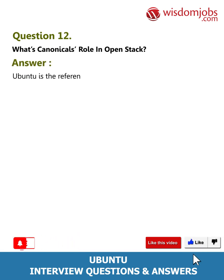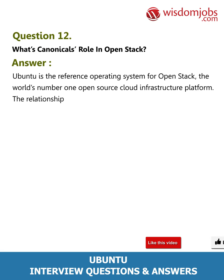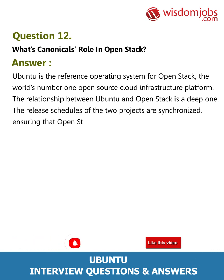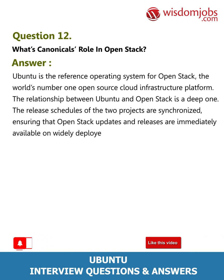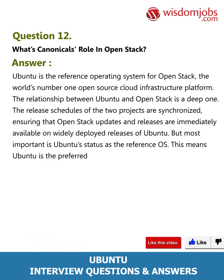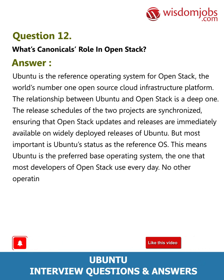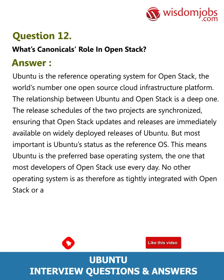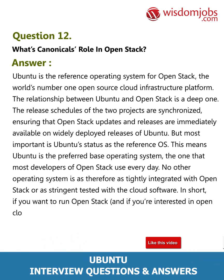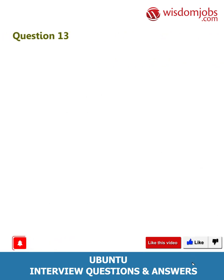Question 12: What's Canonical's role in OpenStack? Ubuntu is the reference operating system for OpenStack, the world's number one open source cloud infrastructure platform. The relationship between Ubuntu and OpenStack is a deep one — the release schedules of the two projects are synchronized, ensuring that OpenStack updates and releases are immediately available on widely deployed releases of Ubuntu. Ubuntu's status as the reference OS means it is the preferred base operating system that most OpenStack developers use every day. No other OS is as tightly integrated with or as stringently tested with the cloud software. If you want to run OpenStack, the best advice is to do so on Ubuntu.